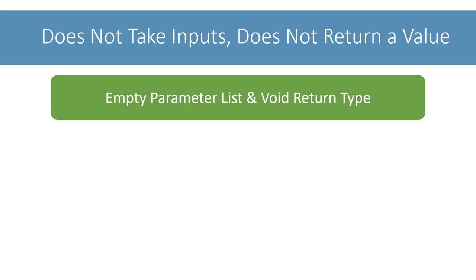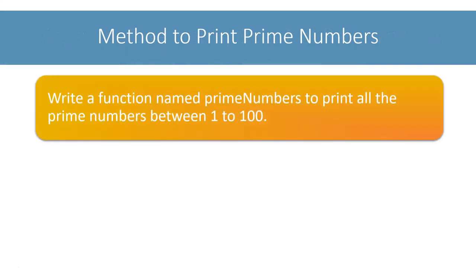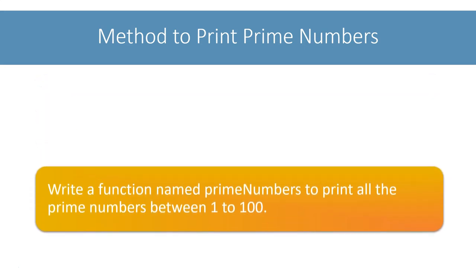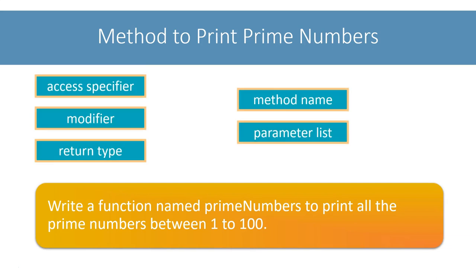The first program we will write is: write a function named primeNumbers to print all prime numbers between 1 to 100. What should be our first step for writing this method? We need to figure out the prototype of the method. As our method needs to print prime numbers between 1 to 100, it does not require any input arguments and will not return any value, so the different parts of the method prototype will be like this.